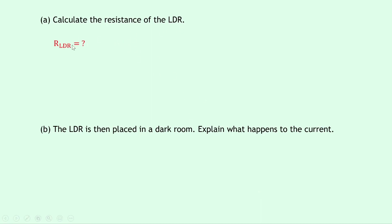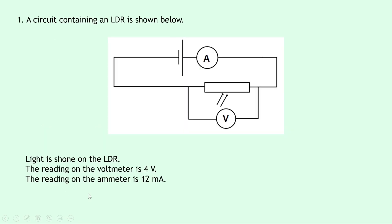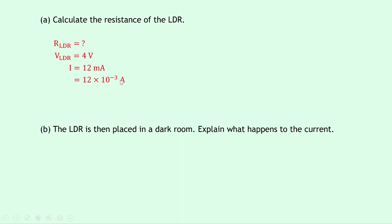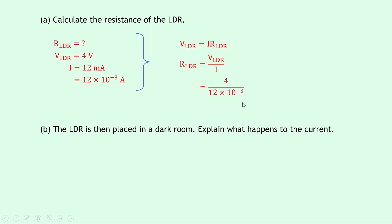Writing down what we know, the voltage across the LDR is 4 volts. Looking at the circuit diagram, the ammeter reads 12 milliamps, and since it's a series circuit, current is the same at all points, so 12 milliamps also passes through the LDR. Using V_LDR = IR_LDR and rearranging, R_LDR = V_LDR / I. Substituting gives 4 divided by 12×10⁻³, which gives a final answer of 333 ohms.